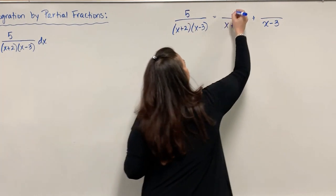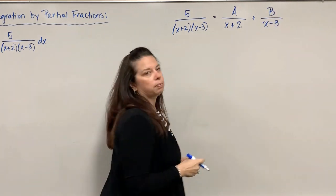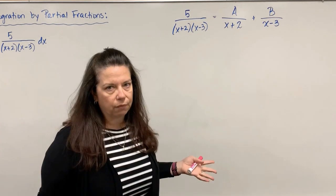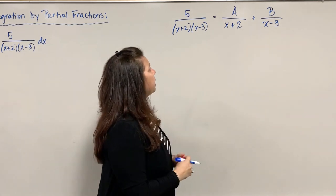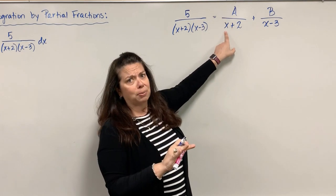What we do is say let's let this numerator be called A, and let's let this one be called B. You could call them whatever you want, but we'll call them A and B.